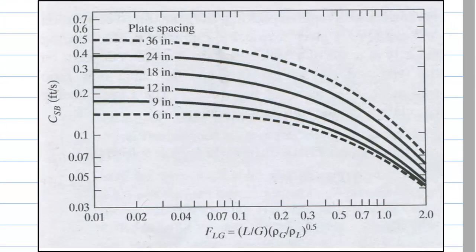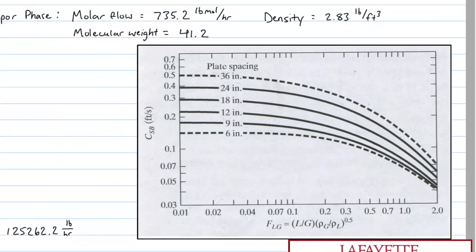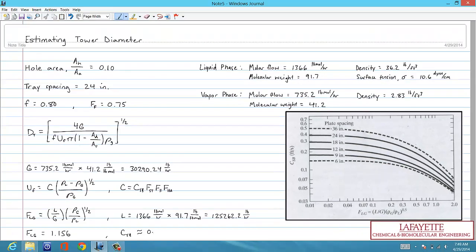Going back to the plot, at f sub lg equals 1.16 and 24 inch tray spacing, we can estimate that c sub sb is about 0.1 feet per second.